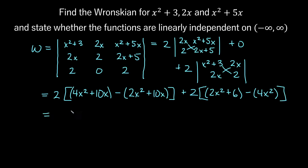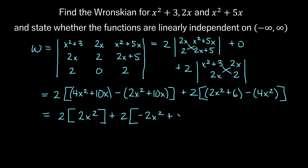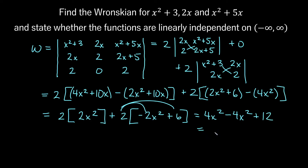Simplifying: from the first piece, 2 times (4x²-2x² + 10x-10x) = 2 times 2x² = 4x². From the second piece, 2 times (2x²-4x²+6) = 2 times (-2x²+6) = -4x²+12. Adding everything: 4x² - 4x² + 12 = 12. So the Wronskian is 12, which is never zero regardless of x. Therefore, these three functions are linearly independent over the real number line.